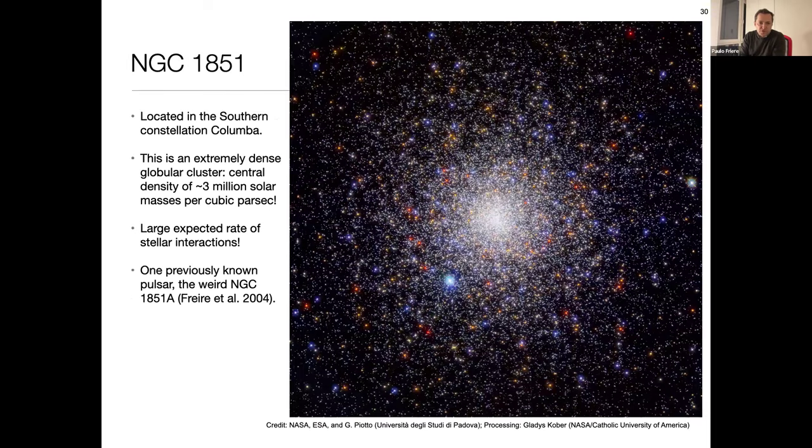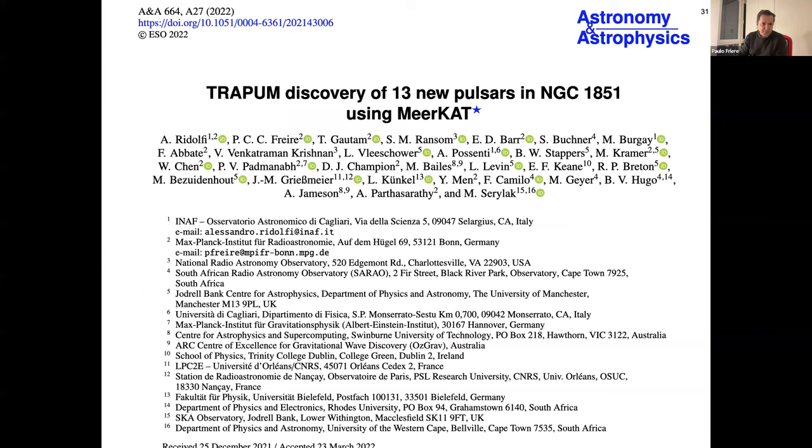One of the globular clusters where we've had more success is NGC 1851. So, this is a huge, but very distant globular cluster located in Columba. The central density here is thought to be about 3 million solar masses per cubic parsec. So, it's really a remarkable environment. And so, there's a very large rate of stellar interactions, but also repeat interactions for each system. The previous known pulsar in this system, NGC 1851A, is an example of that, a pulsar that went through multiple interactions.